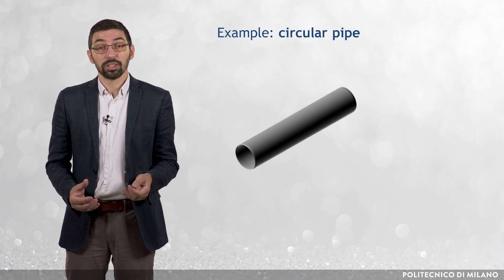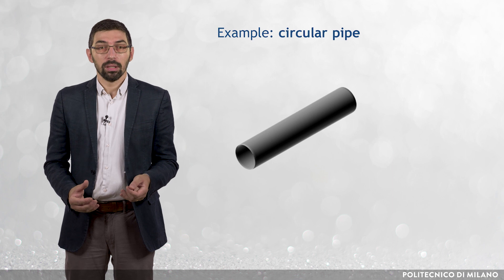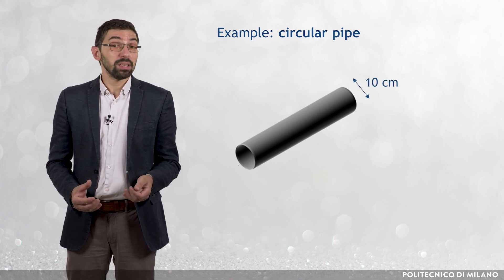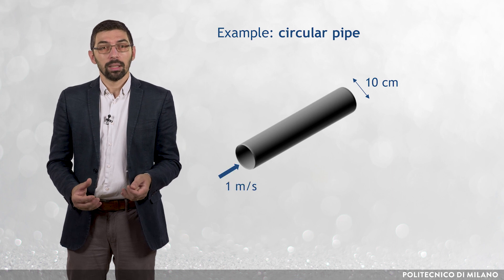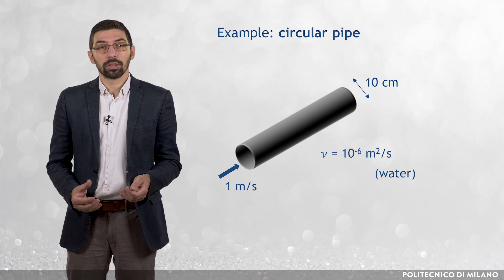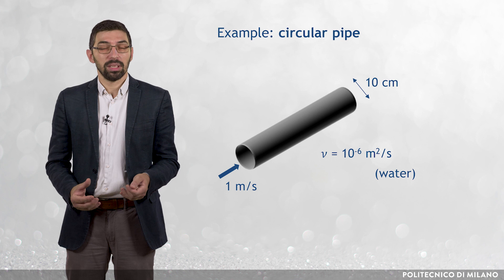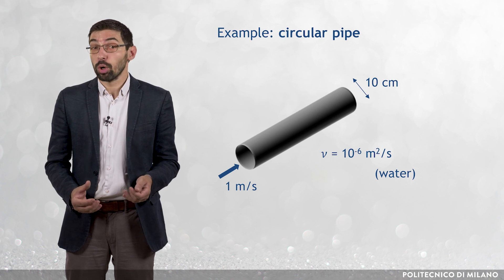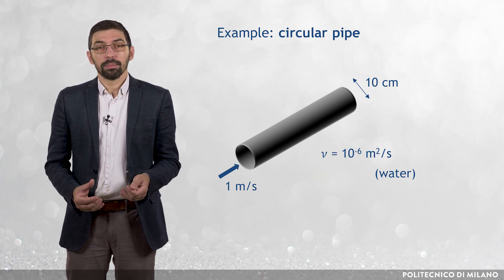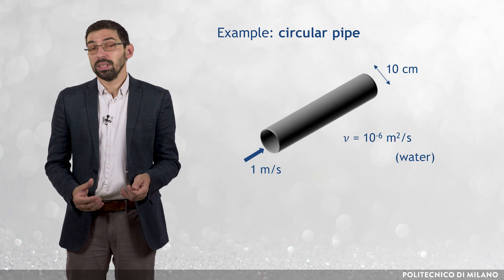As an example, let us consider the turbulent flow in a circular pipe with the following data: pipe diameter equal to 10 cm, inlet bulk mean velocity equal to 1 meter per second, and kinematic viscosity of the carrier fluid equal to 10⁻⁶ square meters per second, characteristic of water. The integral length scale and the integral velocity scale are of the order of the pipe diameter and the inlet bulk mean velocity.